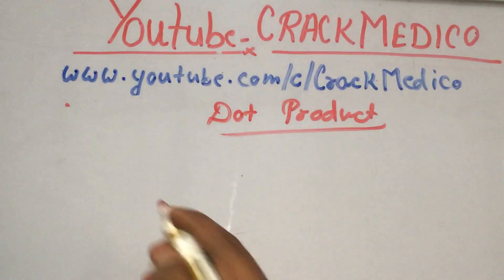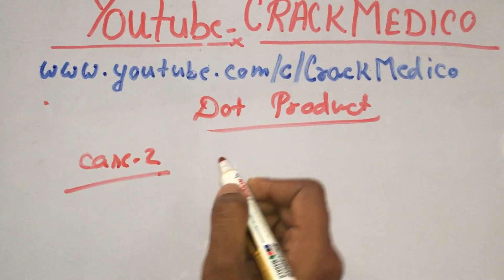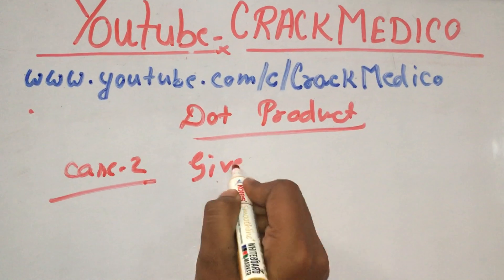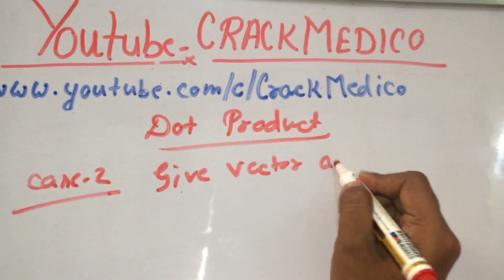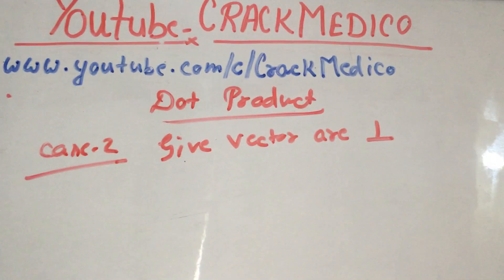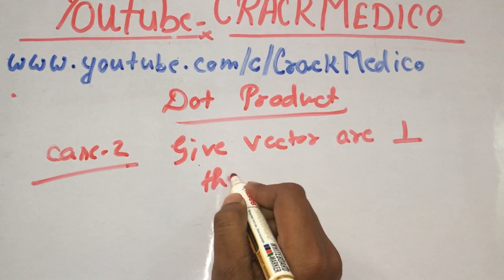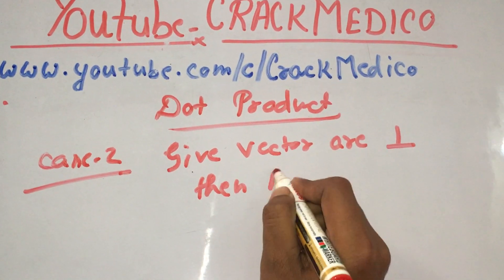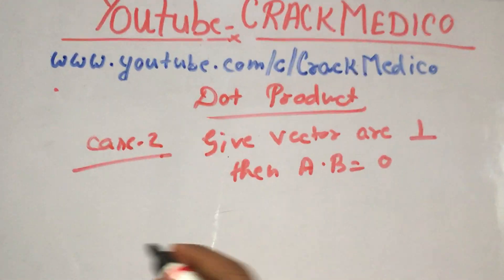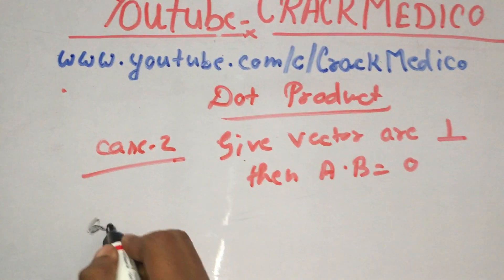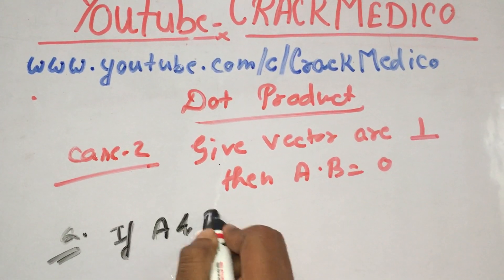Now Case 2: given that the vectors are perpendicular. So suppose the question states: if A and B are perpendicular, find the value of b. The given vectors are A equal to 2i plus b·j plus 3k and B equal to i minus j.